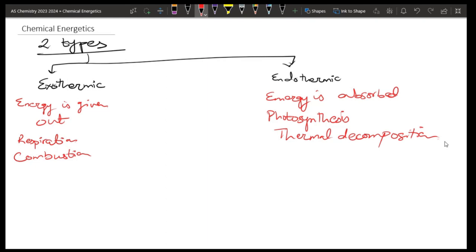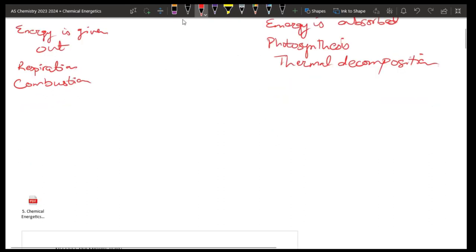This is about exothermic and endothermic. The next thing is that the energy change between a chemical reaction and its surroundings at constant pressure is enthalpy change. Enthalpy change is the definition of enthalpy change.